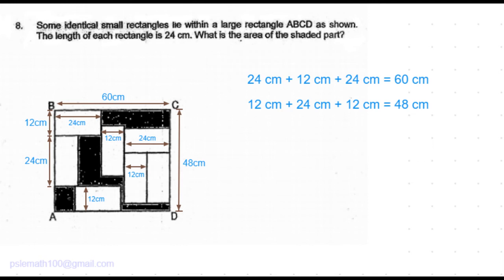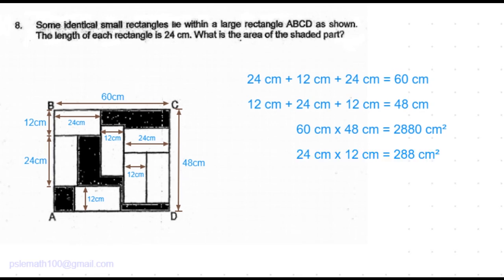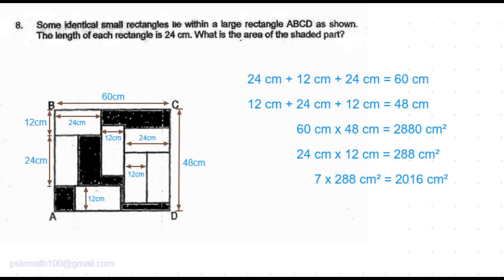Now that we know the length and width of the larger rectangle, let's find its area: 60 centimeters times 48 centimeters equals 2880 centimeters square. The area of one small rectangle is 24 centimeters times 12 centimeters, which is 288 centimeters square. We have seven such smaller rectangles, so the total area is 7 times 288 centimeters square, equal to 2016 centimeters square.